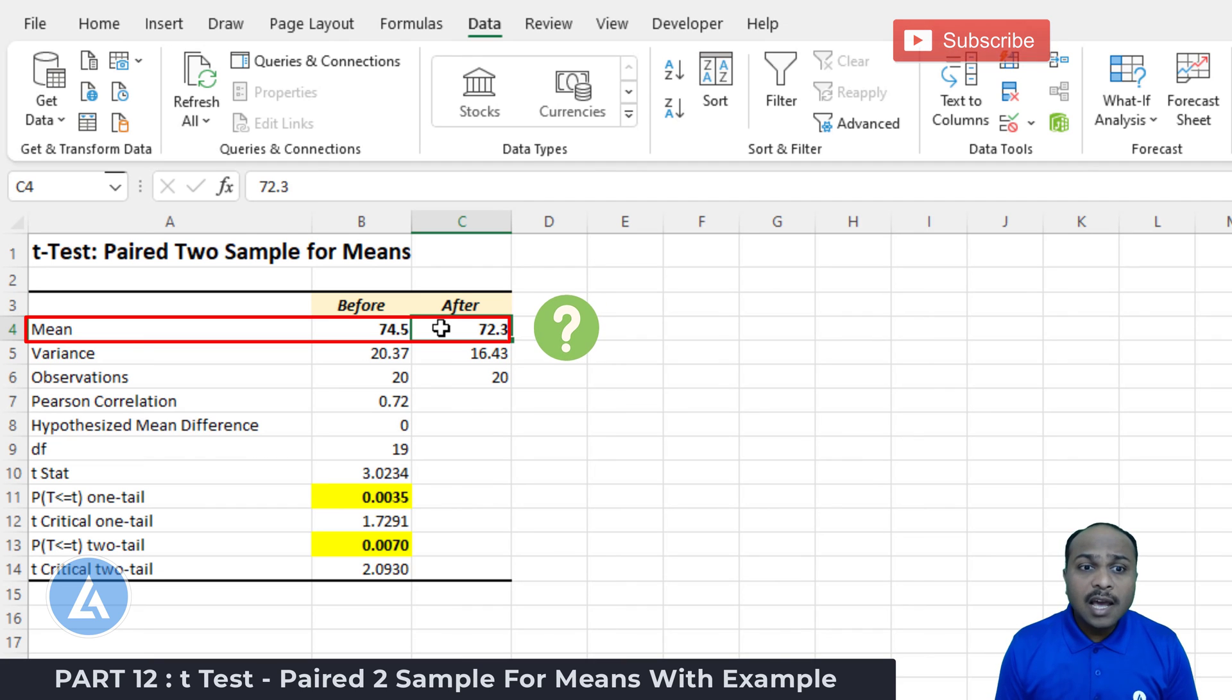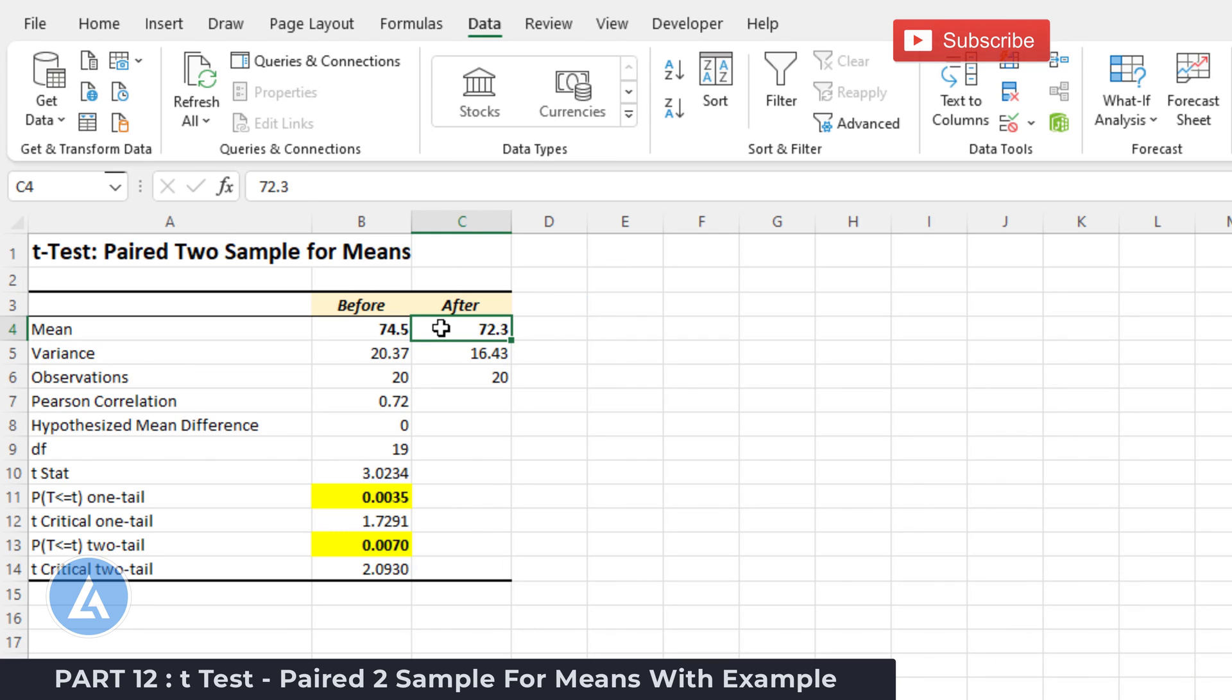Now the question is, are they significantly different or can we see there is an impact of this running program? For that purpose, we need to look at the p-value. If we look at the p-value for one tail and also for the p-value for the two tail, both of these p-values are less than 0.05.